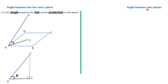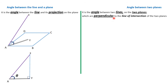Now, angle between two planes. The angle between two planes is normally the angle between two lines on the two planes which are perpendicular to the line of intersection of the two planes. That means there are two lines, one on each plane, both perpendicular to the line of intersection. The angle between those two lines is the angle between the two planes.